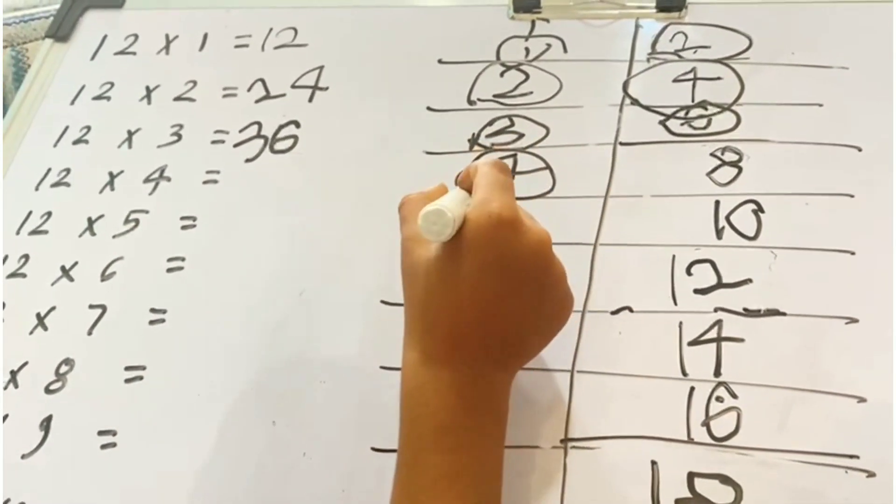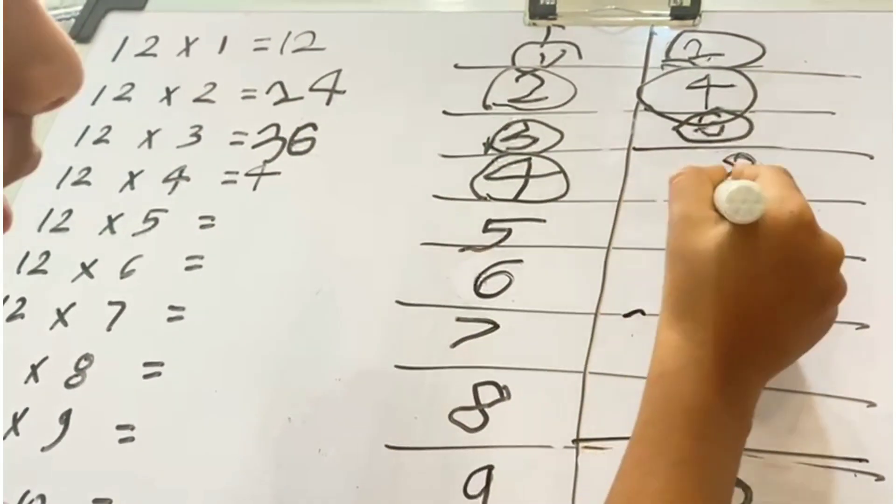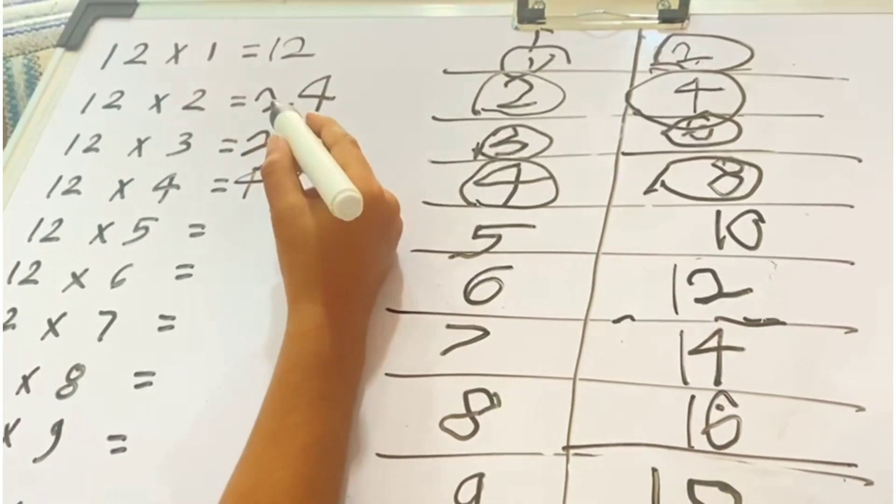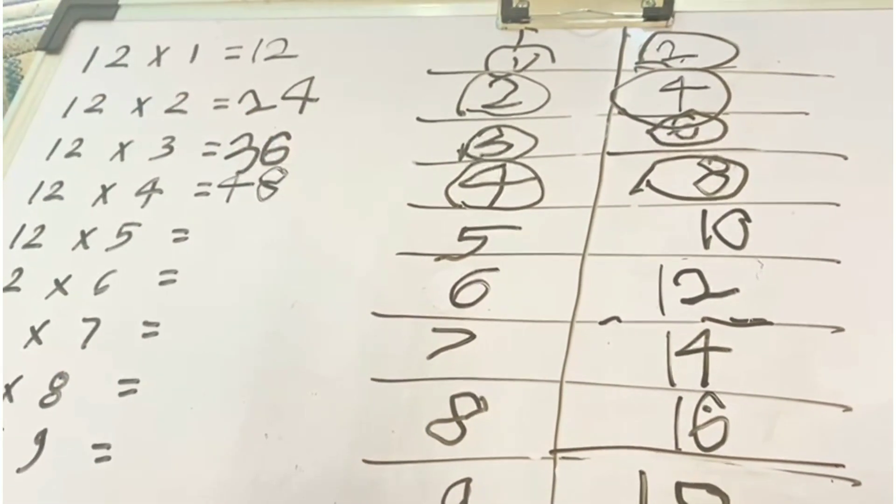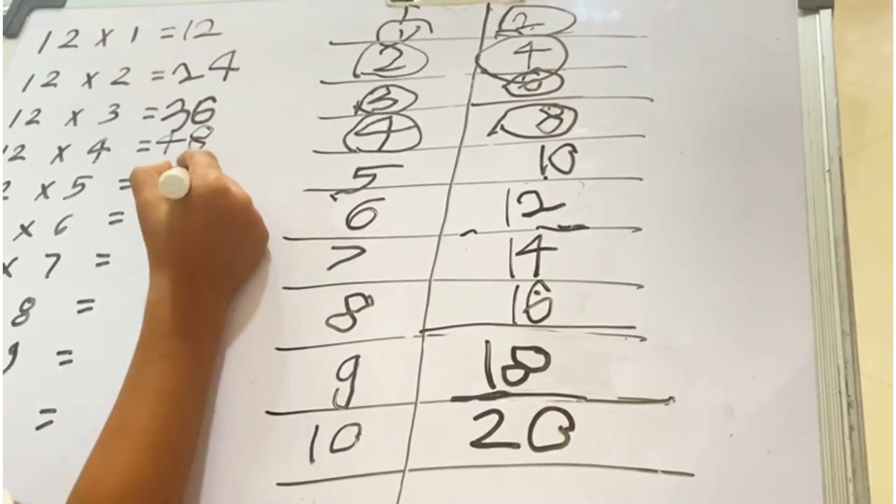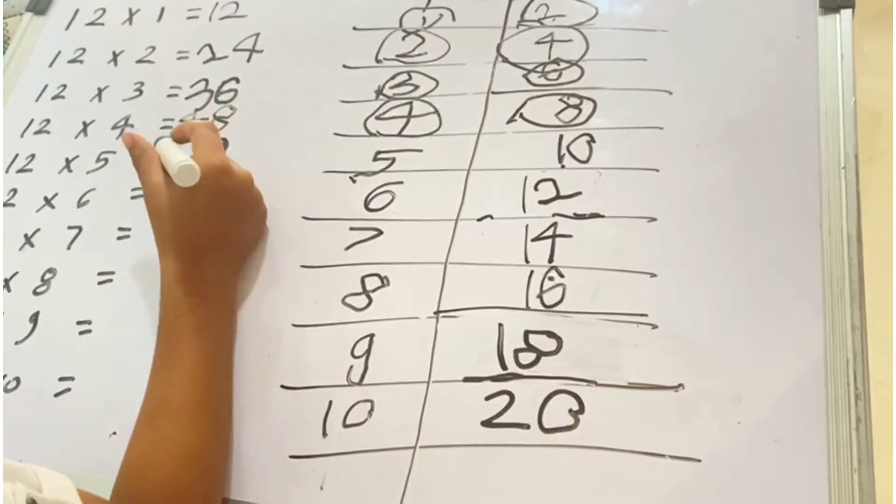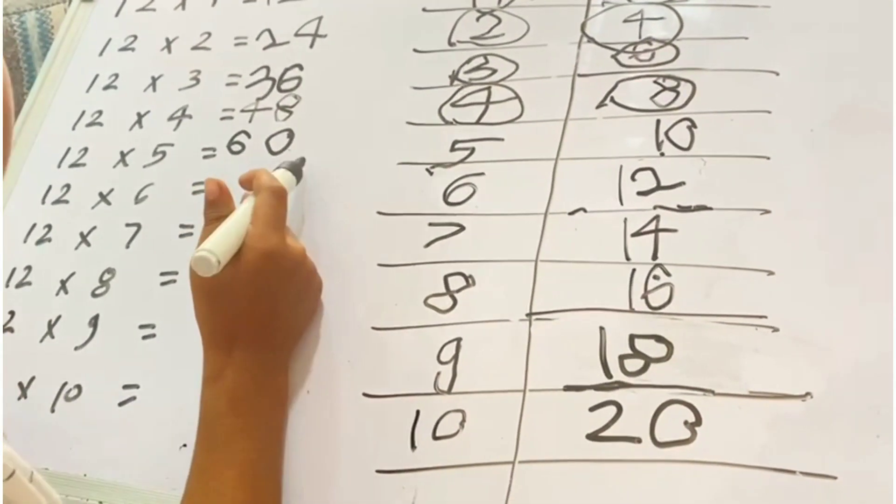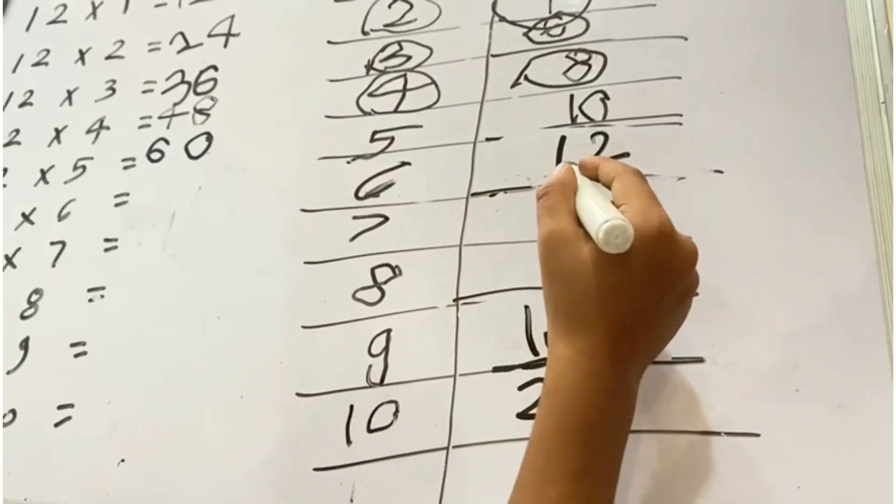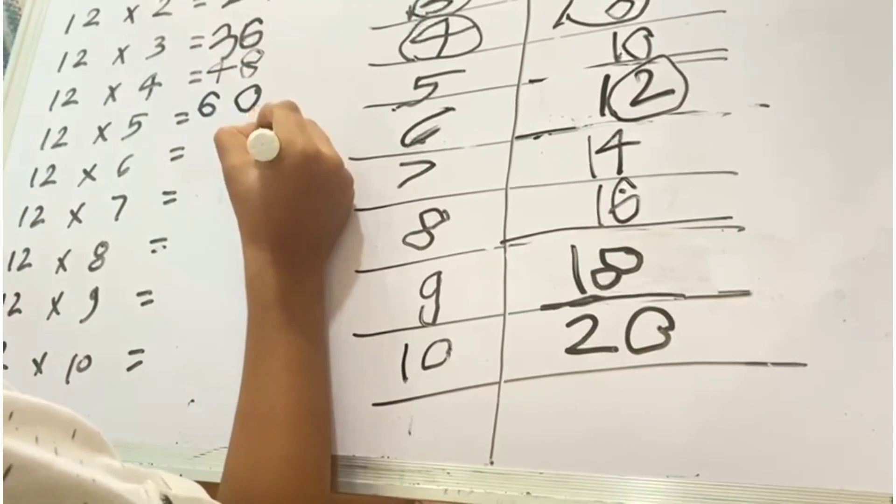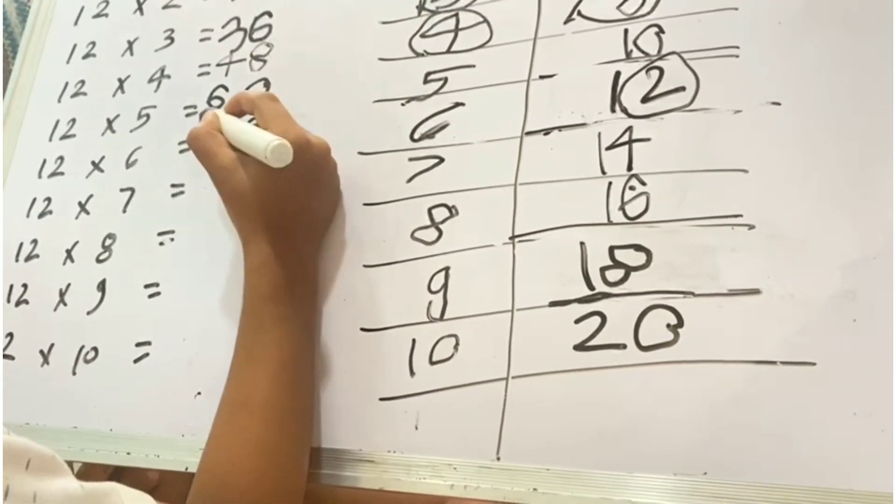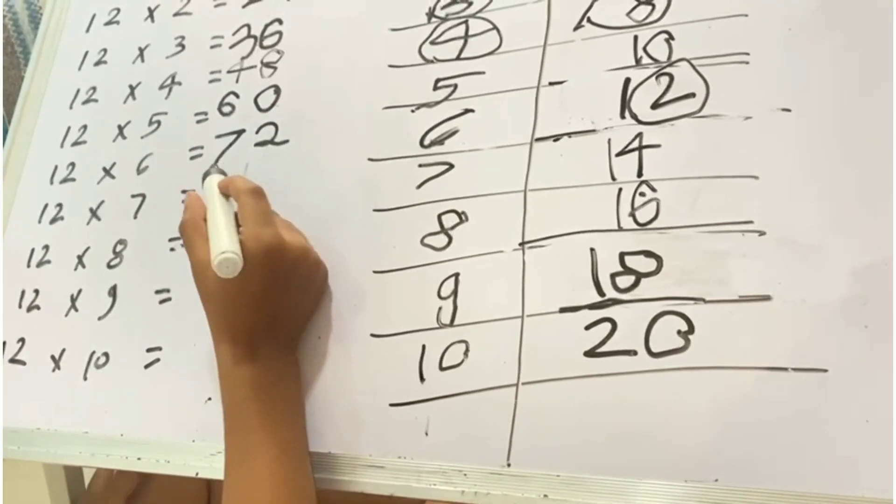This 4 right here, this 8 right here. 12 fours are 48. This 0 right here, 5 plus 1, 6. This 2 right here, 6 plus 1, 7. 12 sixes are 72.